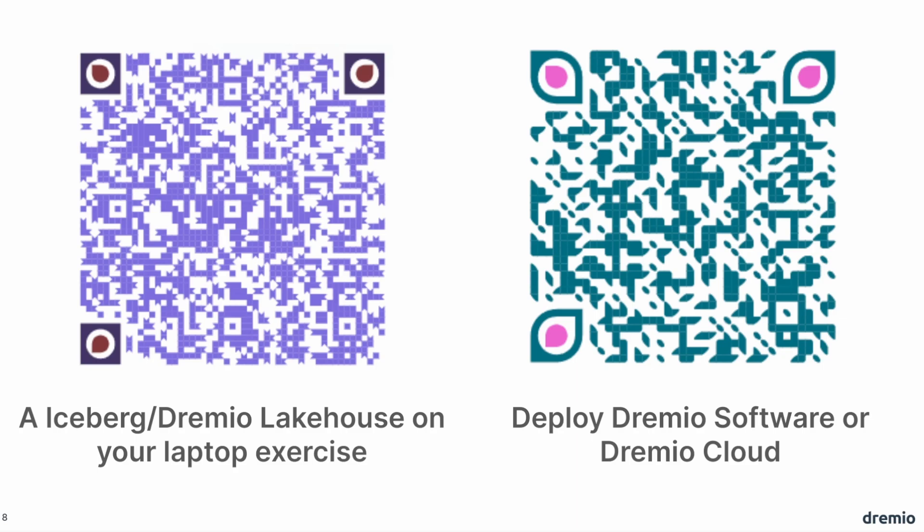If you want to get hands-on with Apache Iceberg, scan the QR code on the left — it walks you through an easy hands-on exercise so you can run queries against Iceberg tables and see them firsthand from your laptop. If you find Apache Iceberg, Dremio, and adjacent tools working well and want to explore putting that into production, scan the QR code on the right to get started with Dremio.